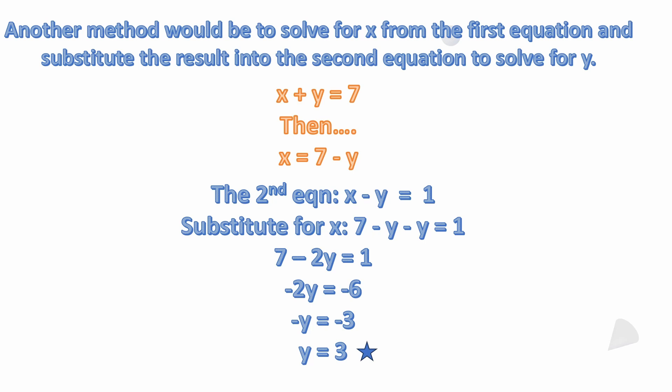Substituting for x, we have seven minus y — that's what x is — minus y again, because that's in our second equation. So seven minus y minus y equals one. Minus y minus y is minus two y, so seven minus two y equals one. From here we can subtract seven from both sides of our equation, which leaves us with minus two y equals minus six.